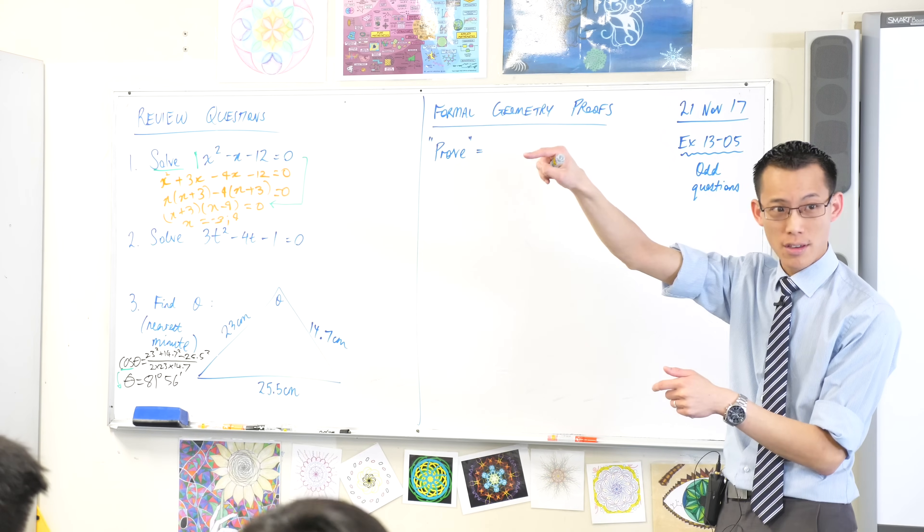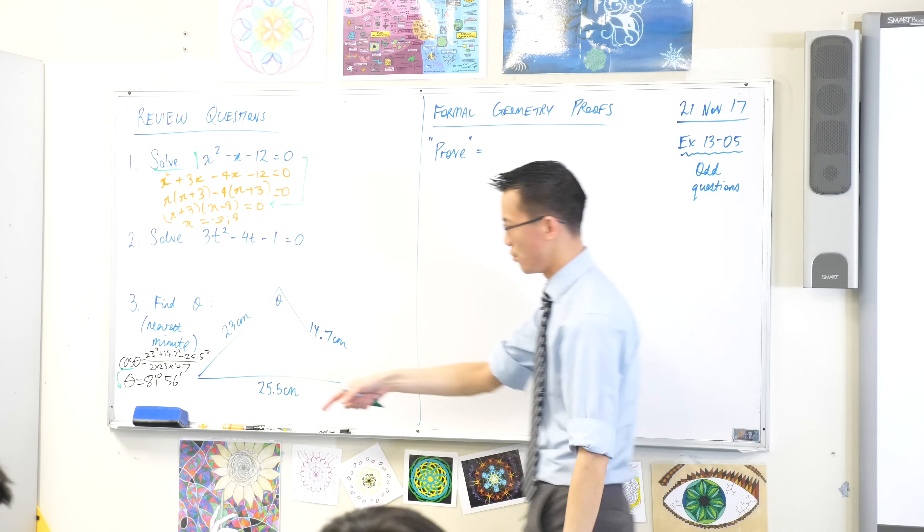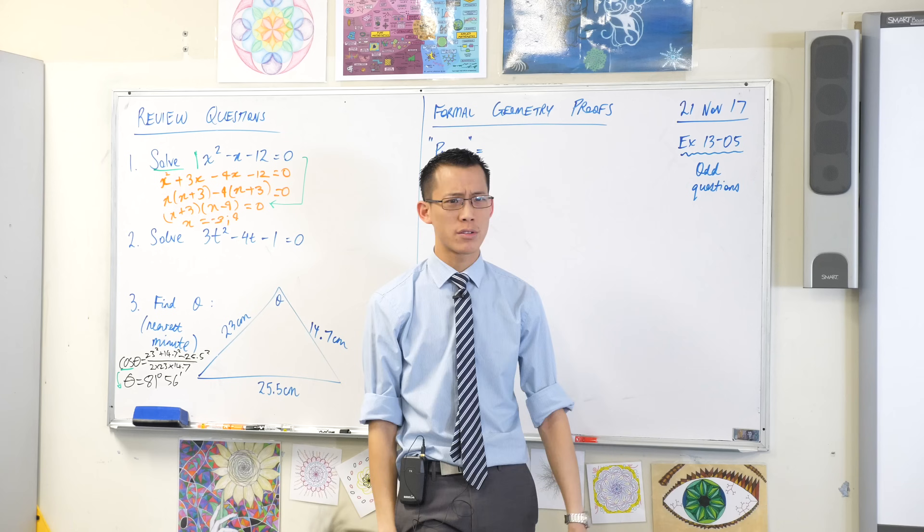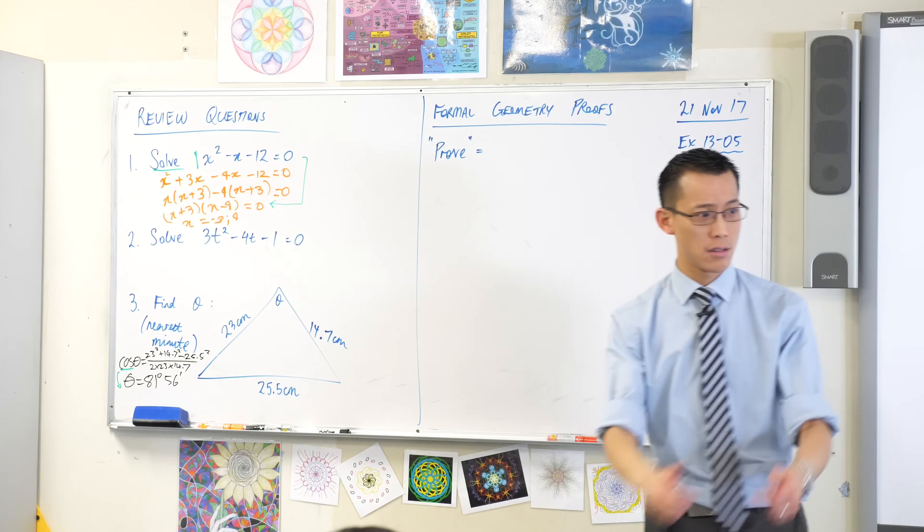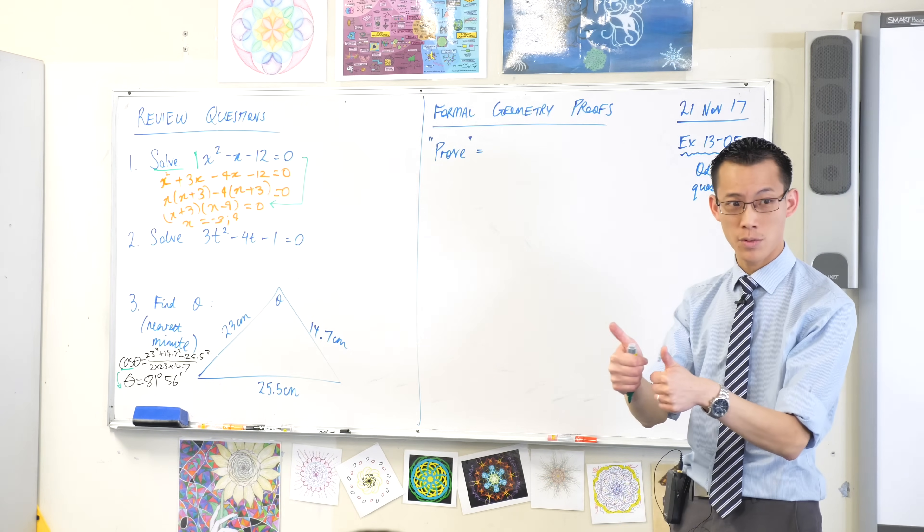You're going to have to shift cos to undo the cos that's on the left-hand side. Do I have agreement with 81 degrees 56 minutes? Yes? Did we round it correctly? Great.